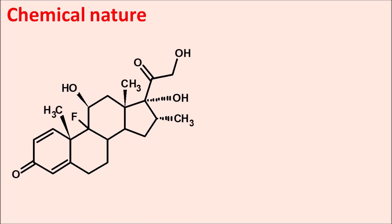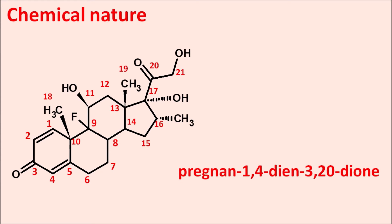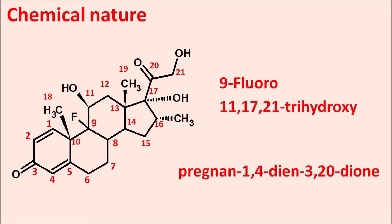Dexamethasone is a steroidal anti-inflammatory drug. It has the steroidal nucleus just like cortisone — specifically a C21 steroidal nucleus, known as pregnane. This pregnane has double bonds at the first and fourth positions and ketone groups at the third and 20th positions, giving it the base name pregnane-1,4-diene-3,20-dione. Additional groups include: a fluoro group at the ninth position (9-fluoro), hydroxyl groups at the 11th, 17th, and 21st positions (11,17,21-trihydroxy), and a methyl group at the 16th position with alpha configuration (16-alpha methyl).